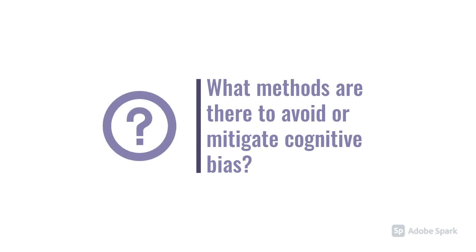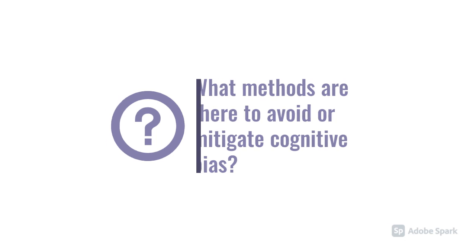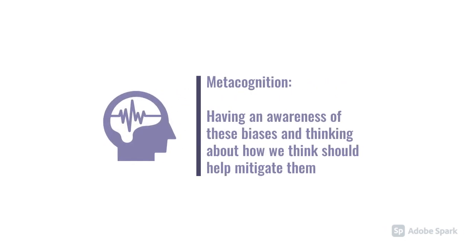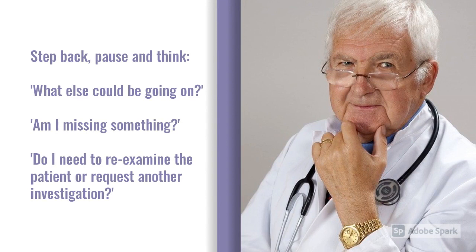So the natural question then is: if we know these things exist, how do we combat them and prevent them influencing our decision-making? The answer is it's very difficult, but there are techniques we can employ. The first concept is metacognition — which sounds a little hippie-ish — but it's essentially having an awareness of these biases. Being aware that we are human and susceptible to them means we can recognise them in ourselves as we're seeing patients and thinking about their differentials and management plan. On a more practical level, take a step back when you can, come away from the patient, and if things aren't adding up, think: what else could be going on?